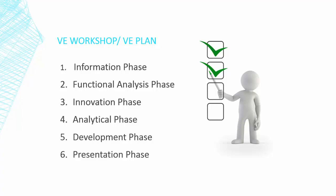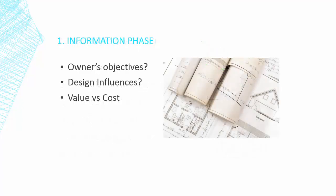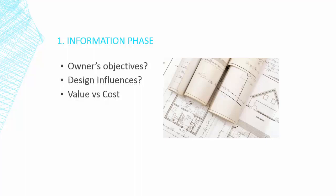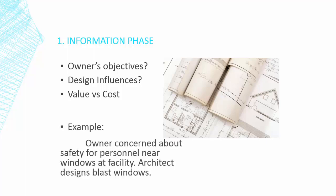We'll get started right away into the information phase. It's here we're going to define the owner's objectives and develop a thorough understanding of the decisions that have influenced the design on the project. Each discipline looks into each potential system in question and determines its value to the owner and the overall cost of the system. This phase will begin the process of narrowing down the VE targets. For our office building, for example, the owner is concerned about safety for personnel near the windows of the facility, so this has influenced the design of the project, so the architect designs blast-resistant windows.